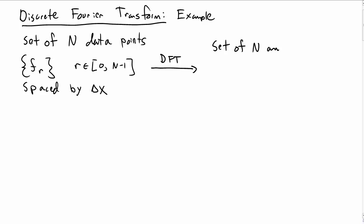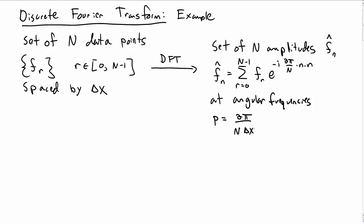The discrete Fourier transform will give us a set of N amplitudes, call them f hat sub n. We can compute those as f hat sub n is a sum of r equals 0 to n minus 1, f sub r e to the minus i 2 pi over big N, n times r. This gives us these amplitudes at various angular frequencies given by 2 pi over big N delta x times little n, whatever that little n value is.